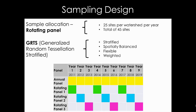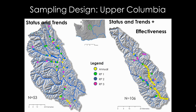This matrix illustrates a typical nine-year study plan for watersheds where we're implementing CHAMP in the Columbia Basin, where sites in rotating panel one are visited three times out of those nine years and sites in the annual panel are visited every year. Looking at the Wenatchee watershed, we have strictly a status and trend study design with sites distributed across both the steelhead and Chinook anadromous extent — about 53 sites in four panels.